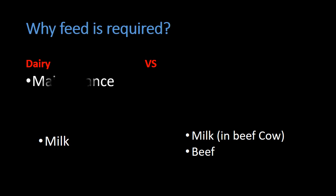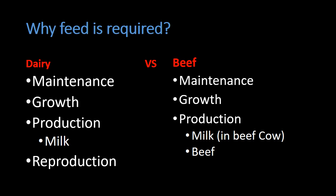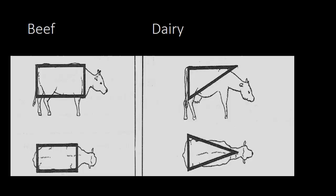Now, why is feed required? In dairy animals we feed for maintenance, growth, production, and reproduction. The same applies to beef animals, but here we must feed more for growth and more for muscle production. The major difference is in body conformation: dairy animals have a wedge shape, whereas beef animals should have a blocky appearance from the top and side, indicating good meat production potential.